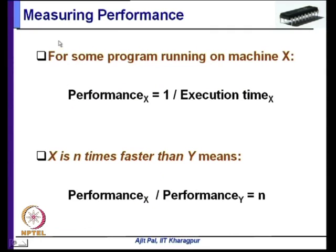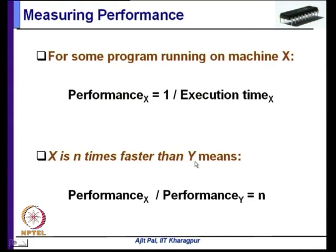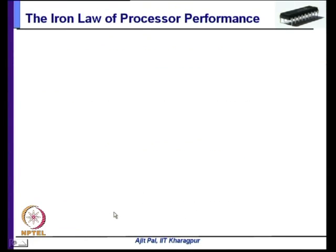Performance is a relative thing. For some program running on machine X, Performance(X) = 1 / Execution Time. Execution time and performance are inversely related: larger execution time means worse performance, smaller means better. When we say X is n times faster than Y, we mean Performance(X) / Performance(Y) = n. This is how we shall try to measure and compare performance.